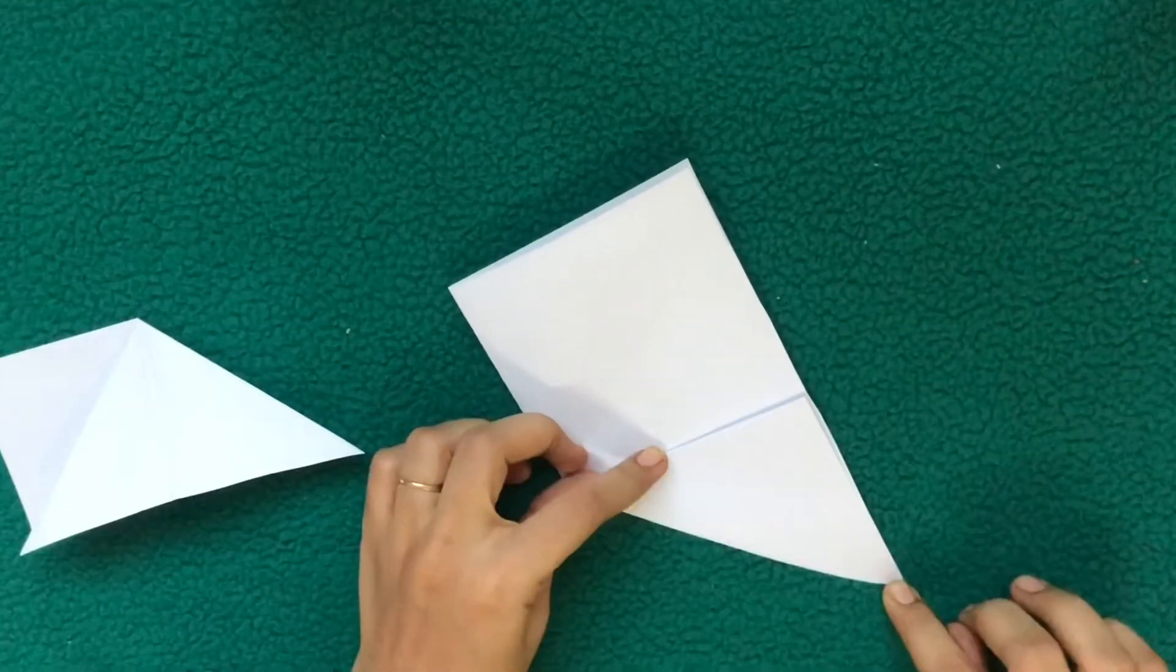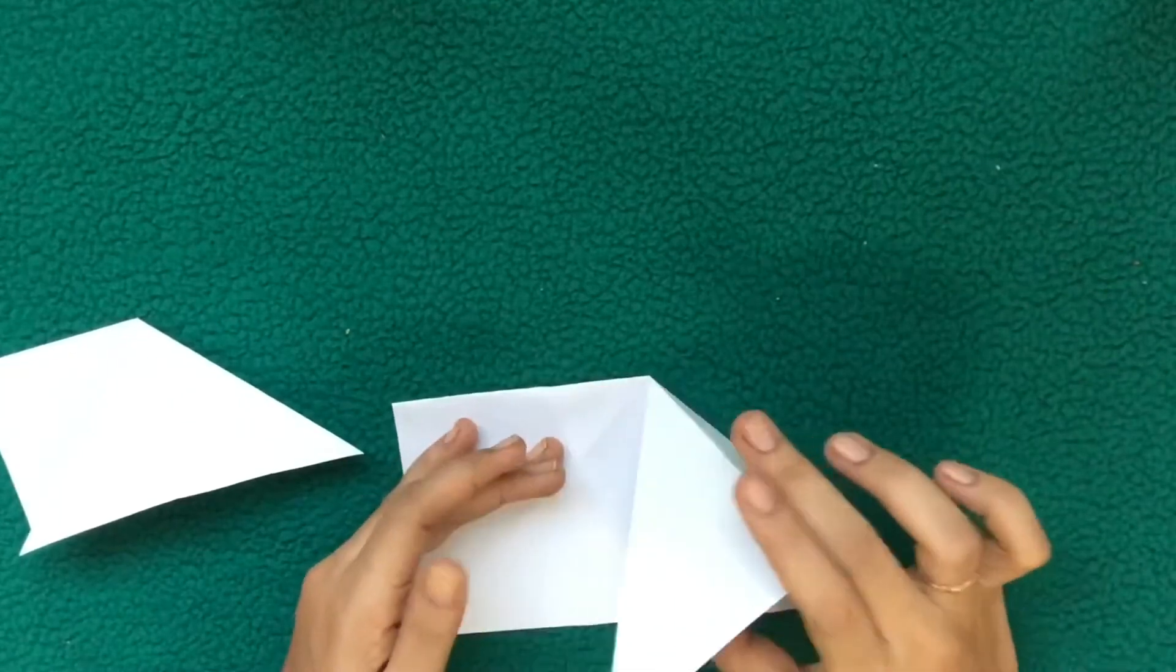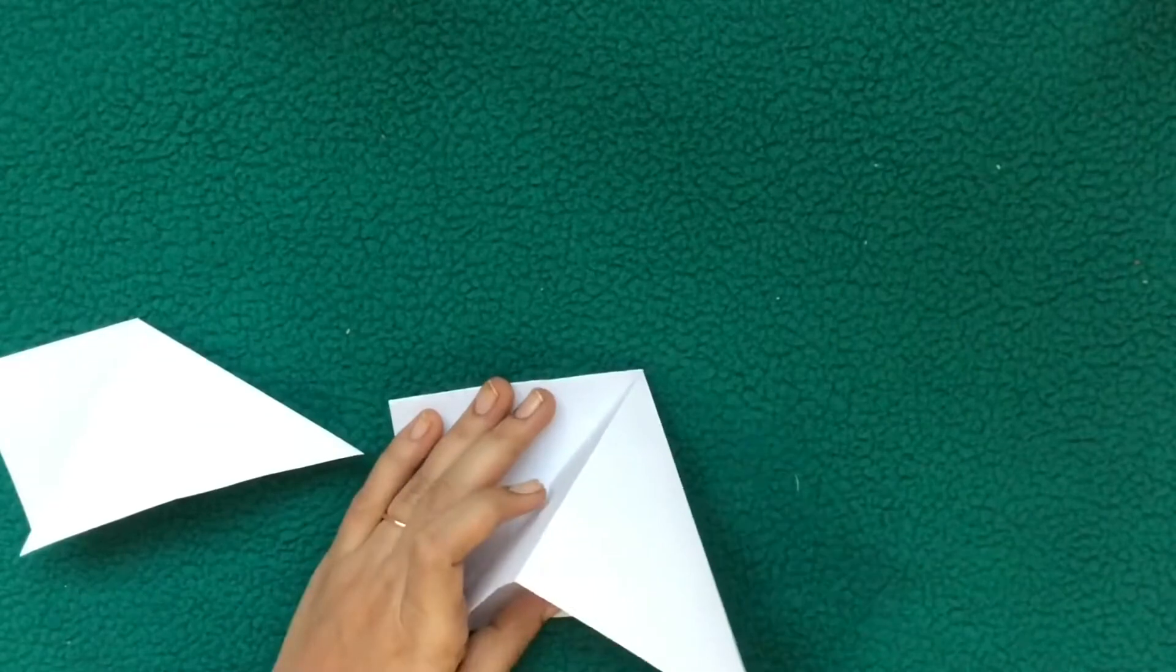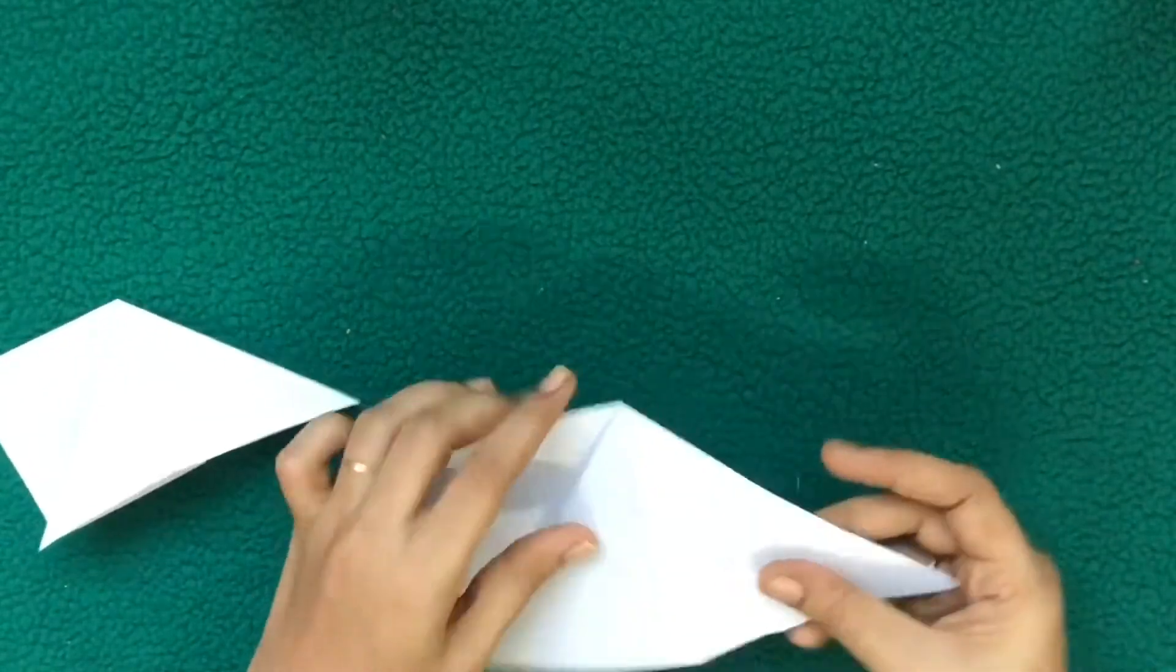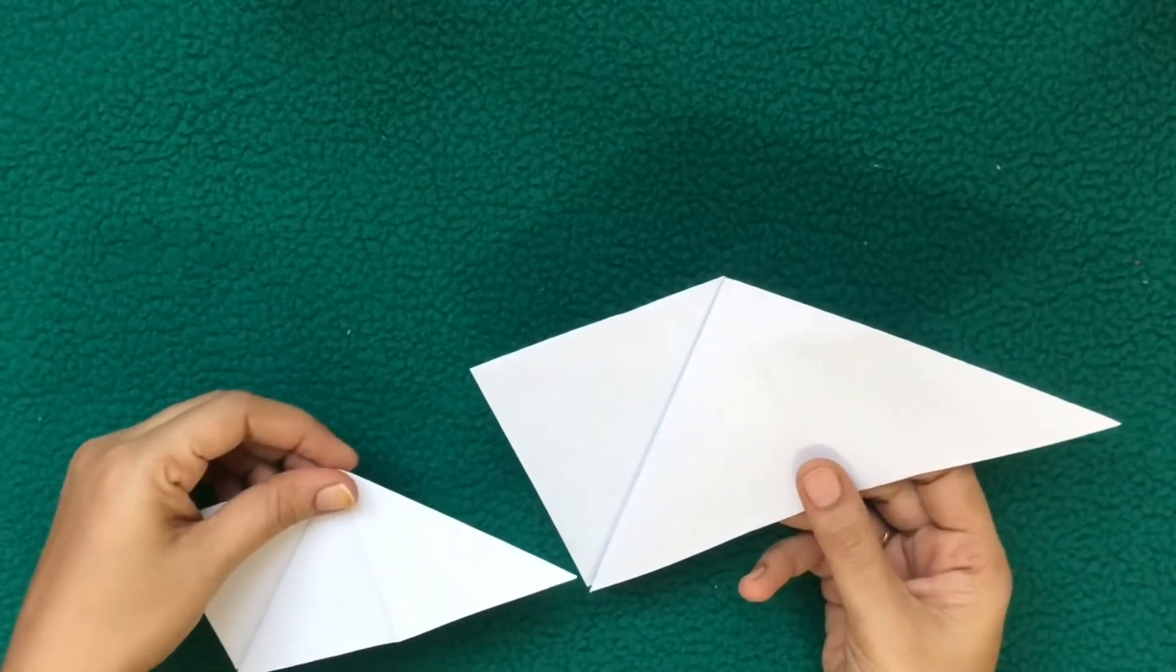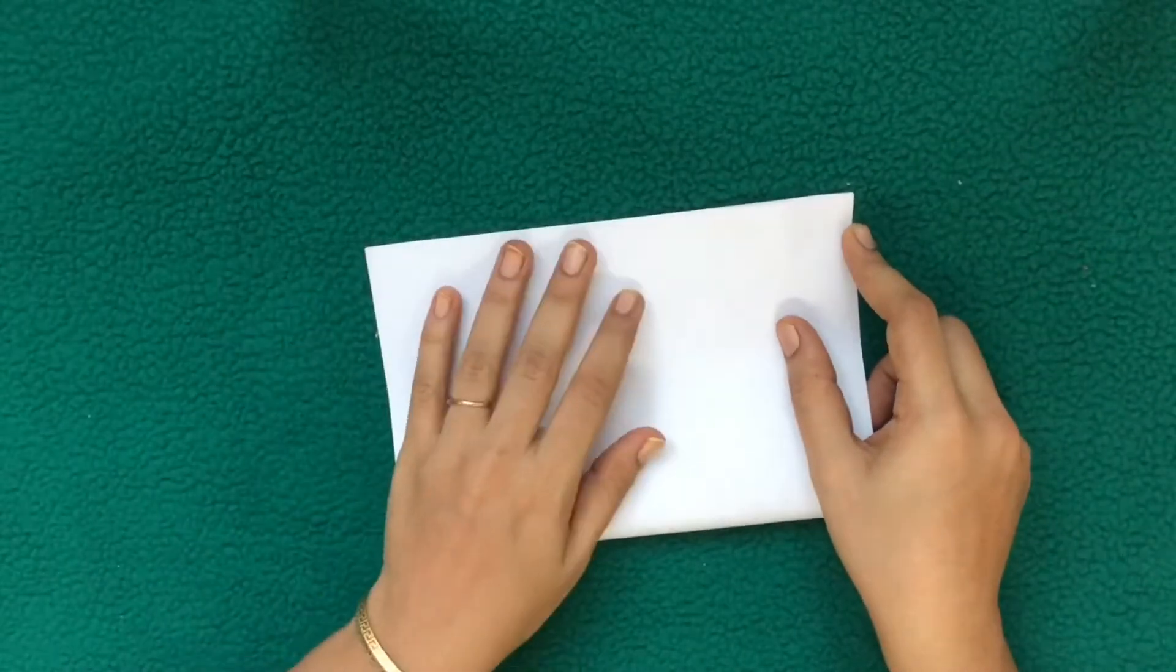Now unfold it. Now press the top right corner at its upper end to open into a triangle and flatten it. That's it, that is squash fold. Now I will show you zigzag fold, fold over and over method.